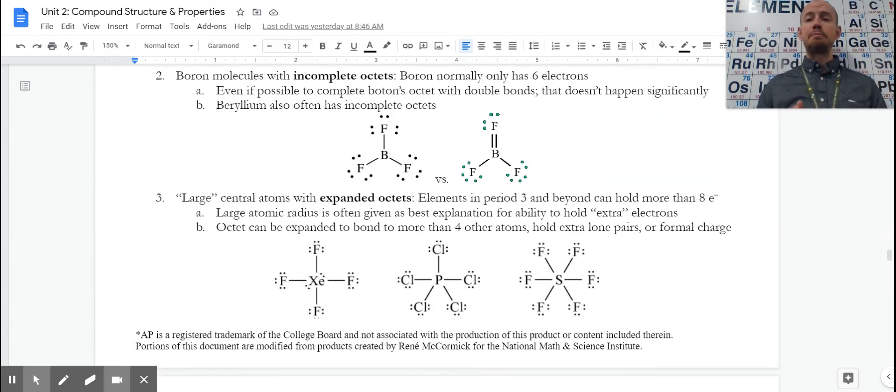The last kind of exception is an exception to the octet rule once again. Most elements are full and stable when they fill their S and their P sub-levels. Some elements are large enough with a large enough Zeff and a large enough radius that they can hold more than eight electrons. Those are the elements in period three and lower on the periodic table.